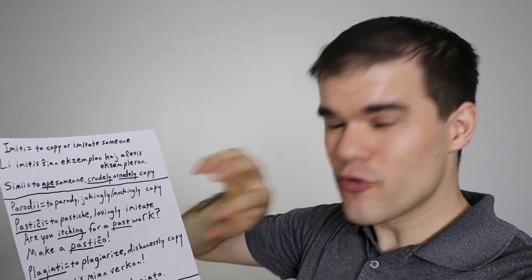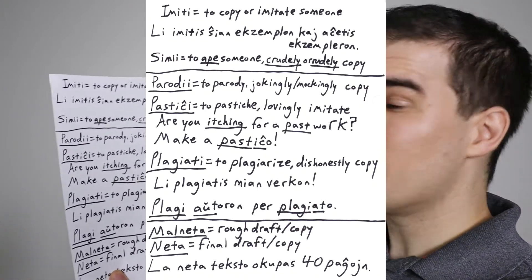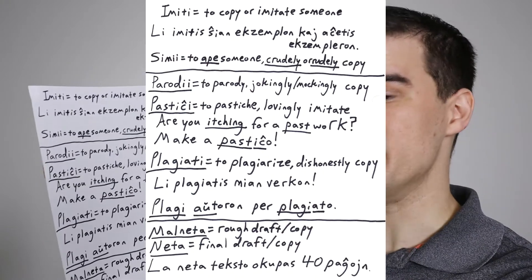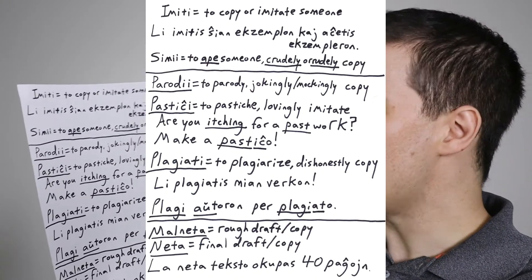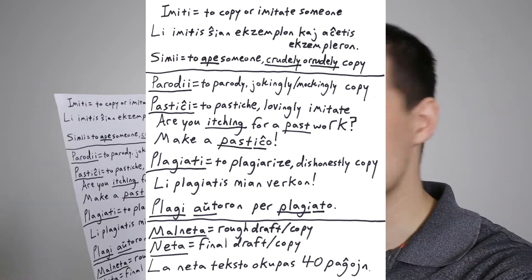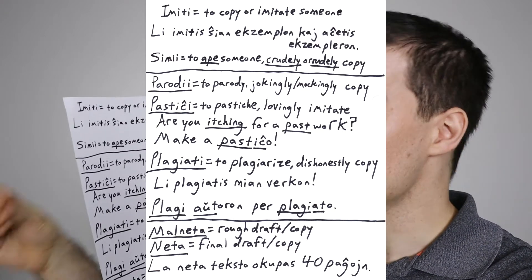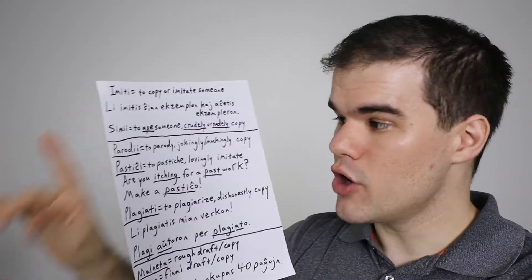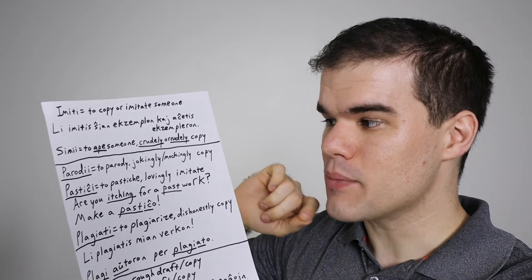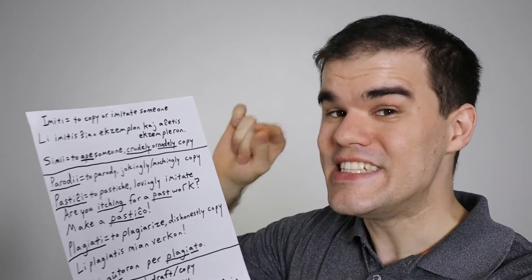Now there are three p-words that are all forms of imitation, sort of the good, the bad, and the funny, I guess, is how you look at it. And they are parodii is to parody something, to jokingly or mockingly copy something. So SNL skits, those are parodies. So parodio, make sure you note there's two i's in the infinitive, it's not parodi, it's parodii.